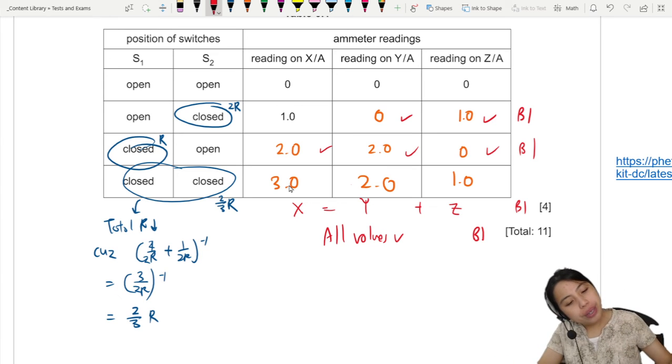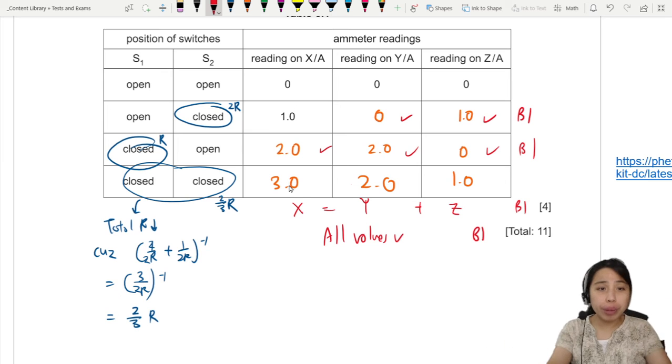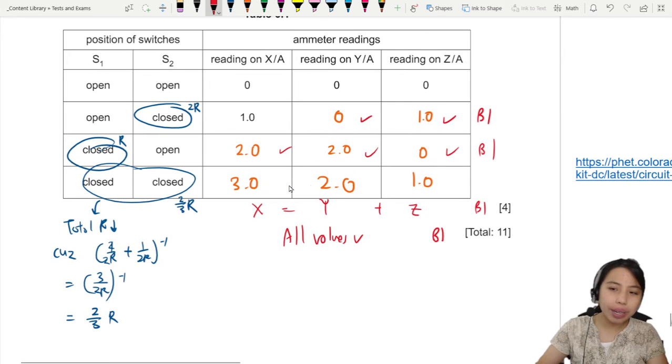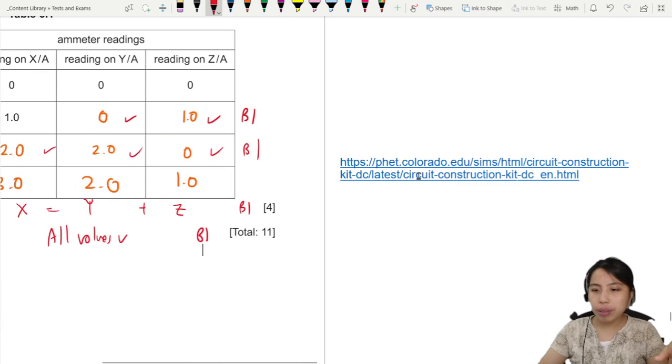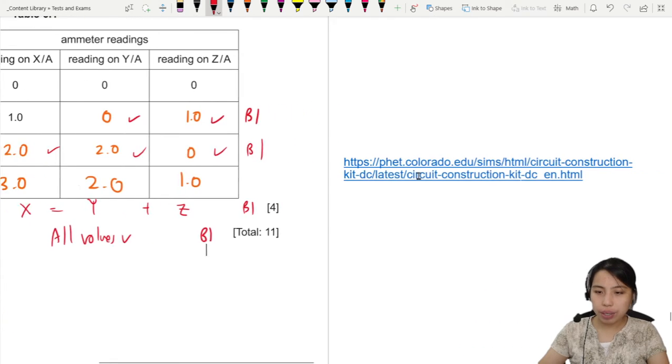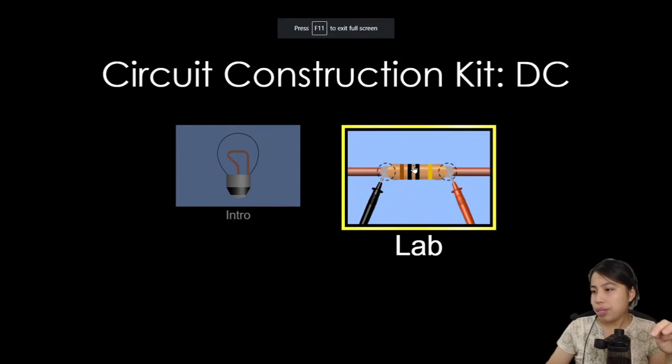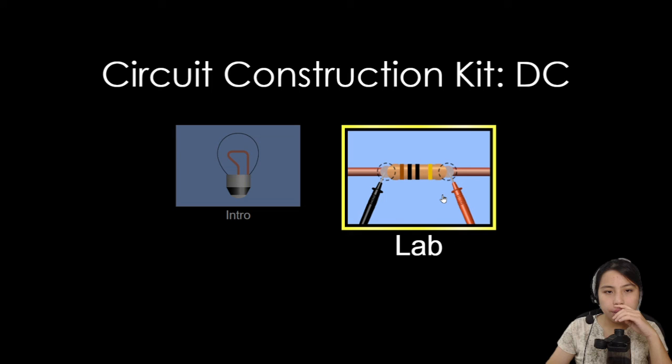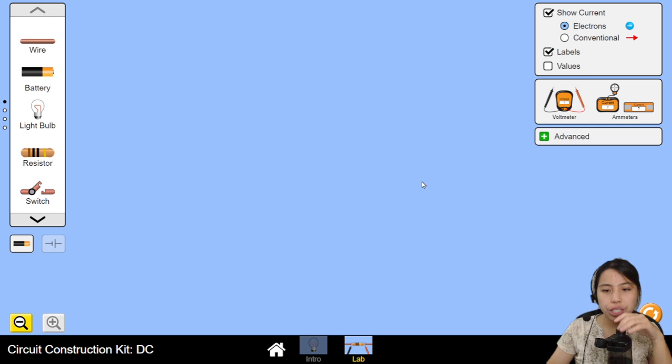So to understand this circuit changes a bit better, I recommend you try out building the circuit in real life. Or if you find that it's quite impossible. Do check out the simulation link over here. So this link is a DC circuit construction kit by PhET. P-H-E-T. Very nice.